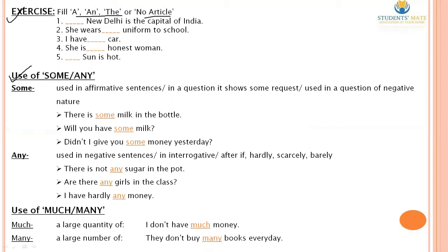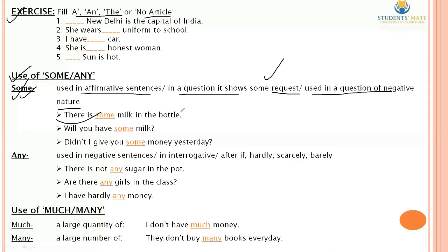Let's talk about the use of 'some' and 'any'. 'Some' is used in affirmative sentences. In a question, it shows a request — when please or kindly is implied, 'some' is used. It is also used in questions of negative nature (interrogative negative questions). For example: 'There is some milk in the bottle' (affirmative). 'Will you have some milk?' (request question). 'Didn't I give you some money yesterday?' (negative nature question).